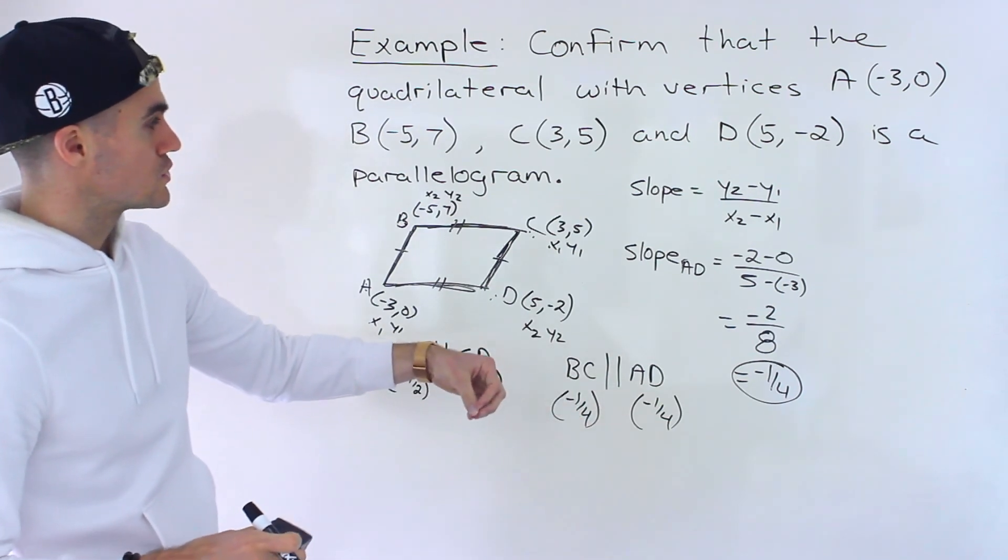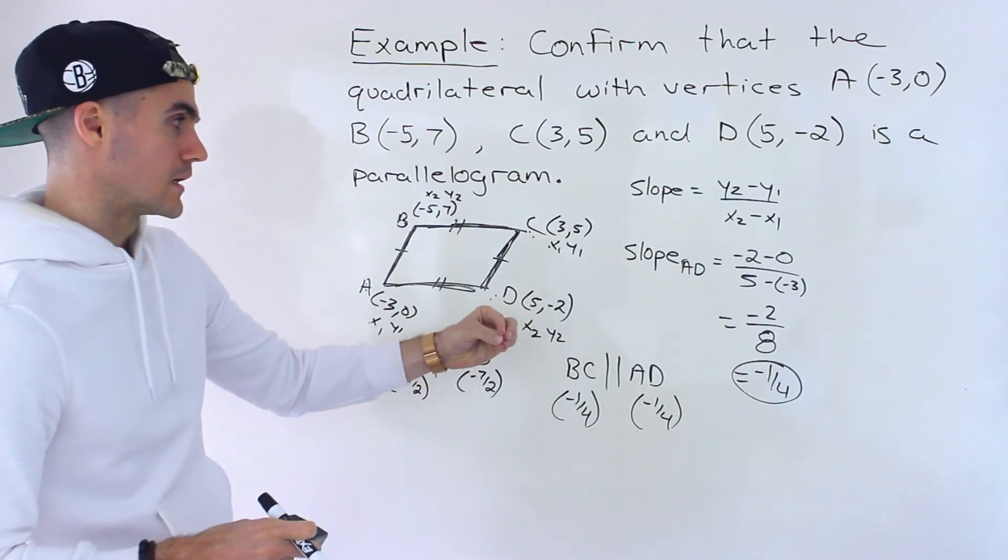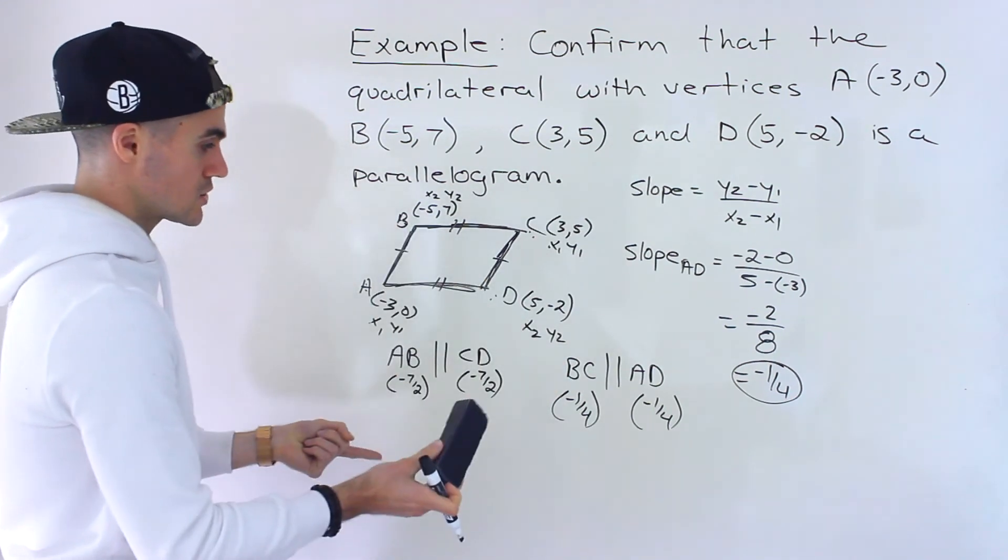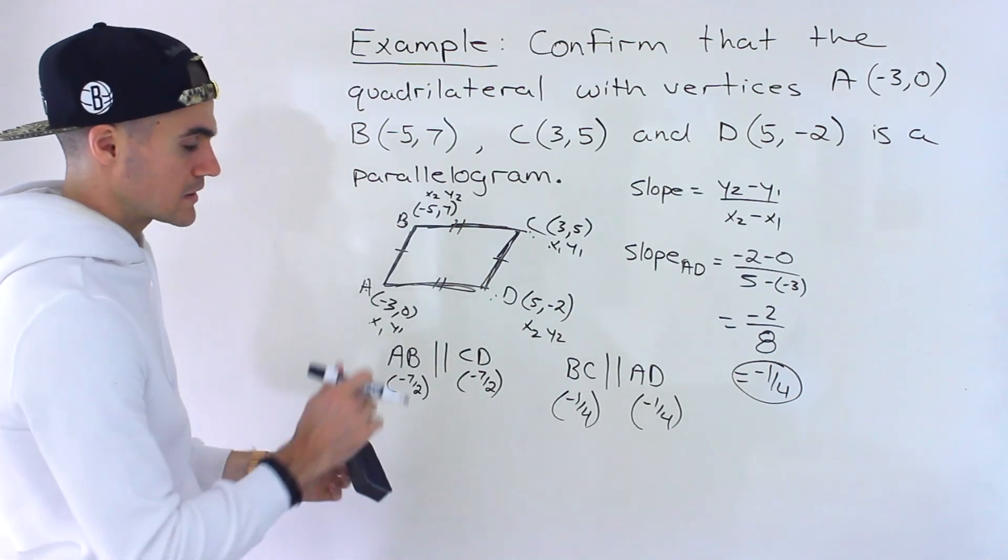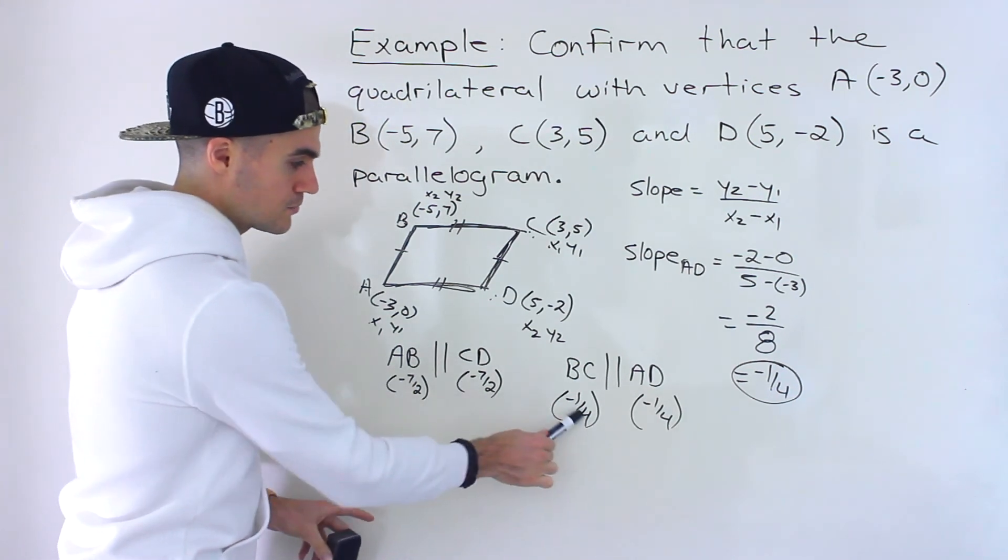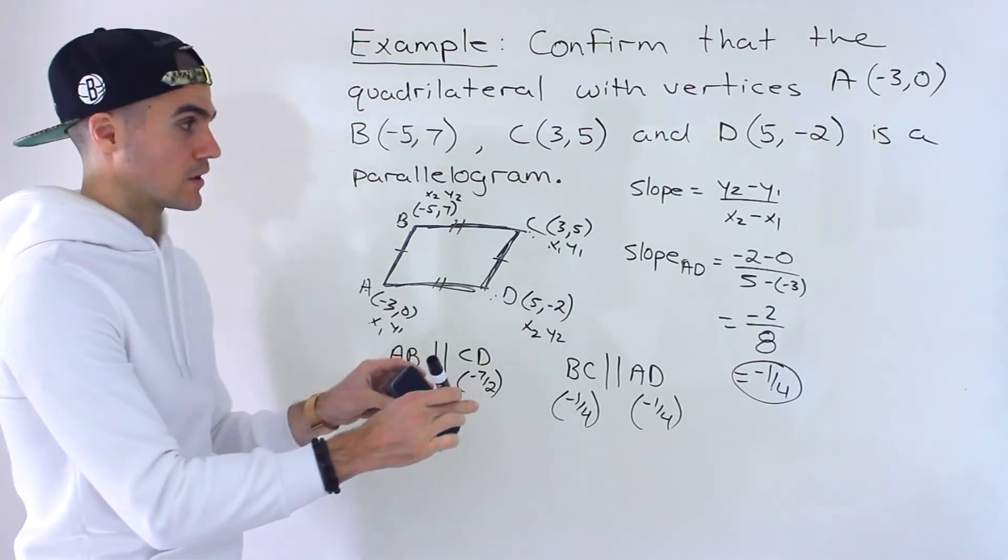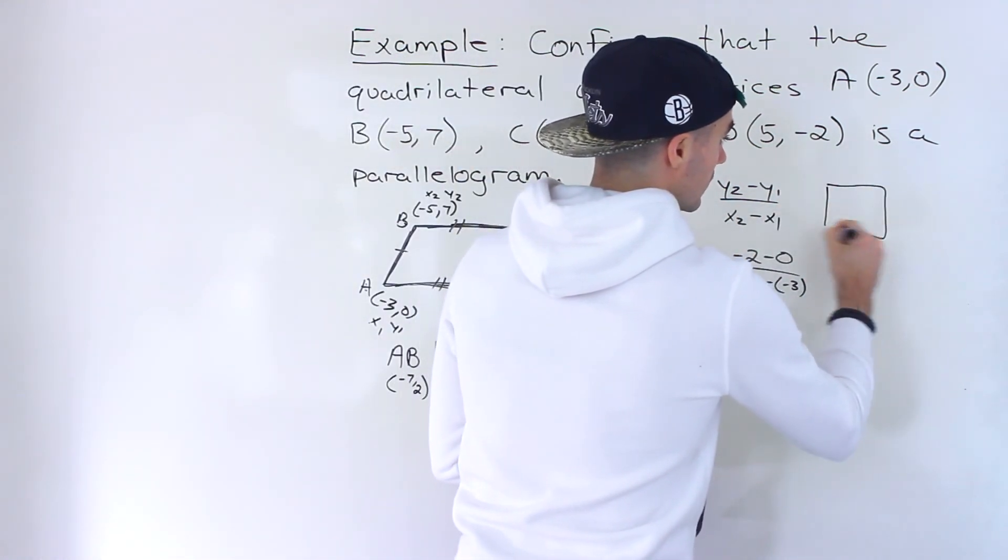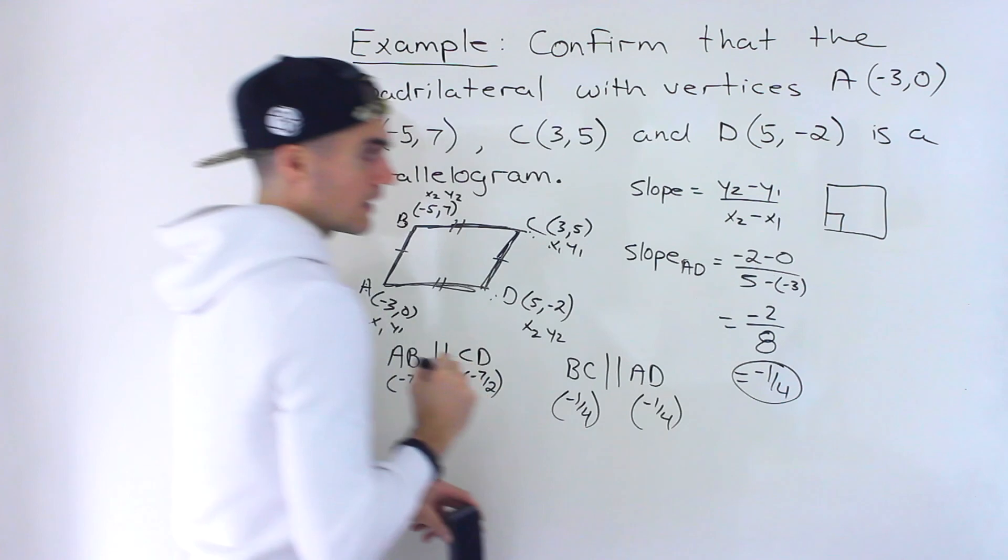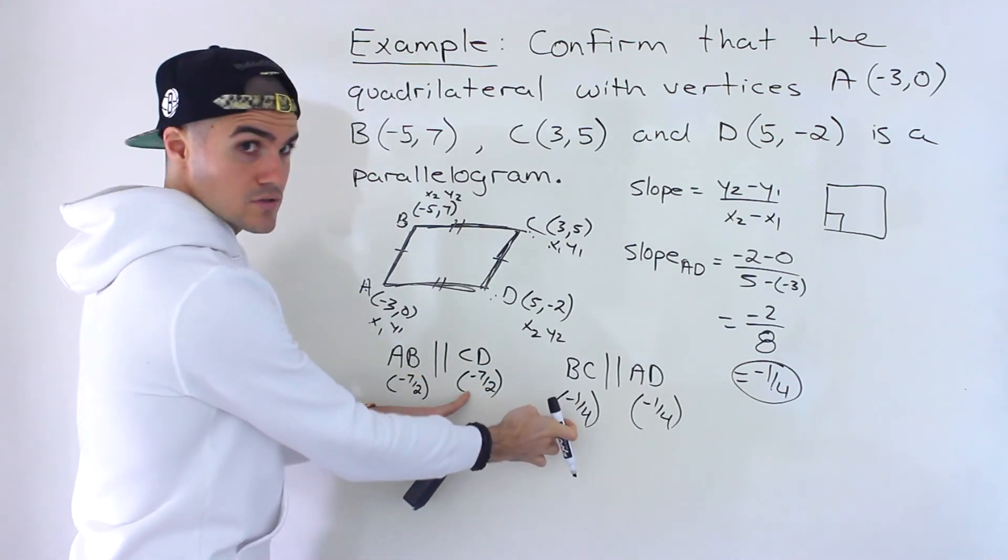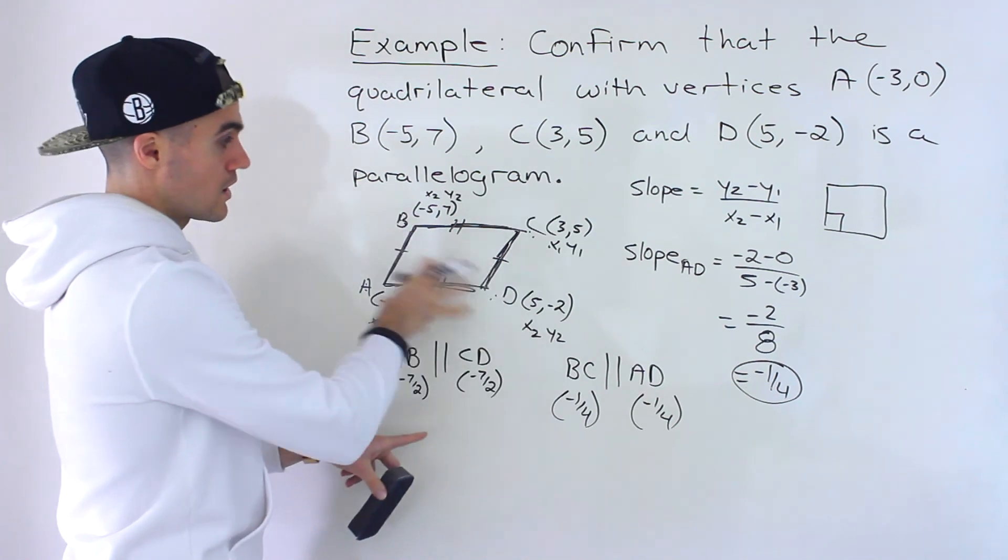Now, if you wanted to show that, for example, let's say that it's a rectangle, well you'd have to do these same calculations. You'd have to find these slopes, but then you'd have to further check whether these slopes are negative reciprocals of one another. Because with a rectangle or a square, right, there's a 90 degrees right there. In this case, these are not negative reciprocals of one another. So we know this is not a rectangle.